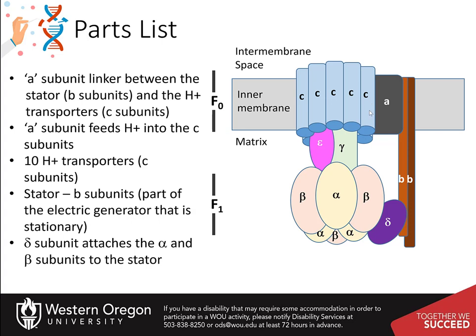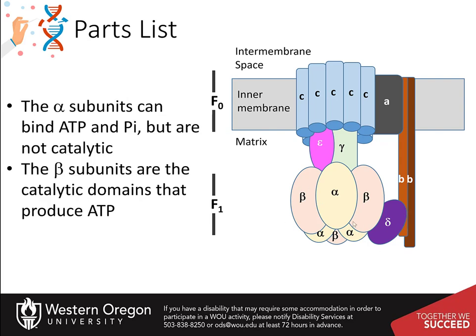We will visualize this process more fully over the next several slides. Let's talk about the structure of the F-1 domain. The stator attaches to the F-1 domain through the delta subunit. Recall that the stator, subunit B, is immobile. The F-naught and F-1 domains are also connected together by the gamma and the epsilon subunits of the protein, which function like an axle that can be used to connect and rotate the F-naught motor domains.